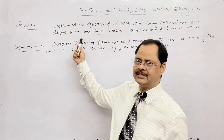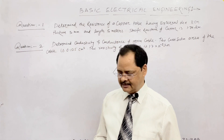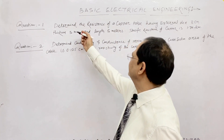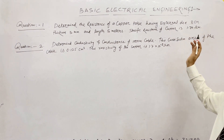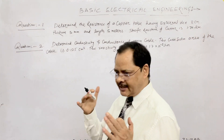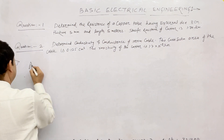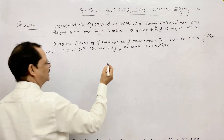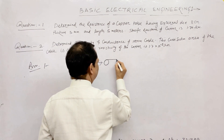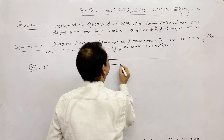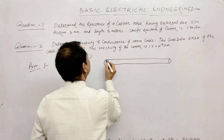These questions will come in the competitive exam. Now let's see — determine the resistance of a copper tube having external diameter 8 cm. So we will be able to obtain the resistance of this copper tube with all the given details.